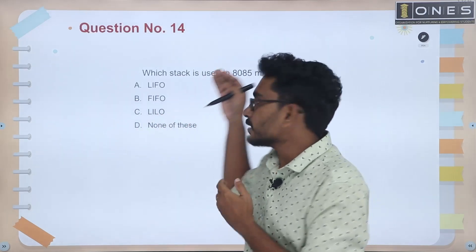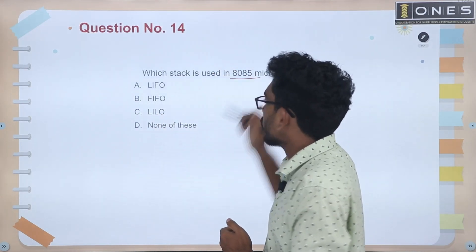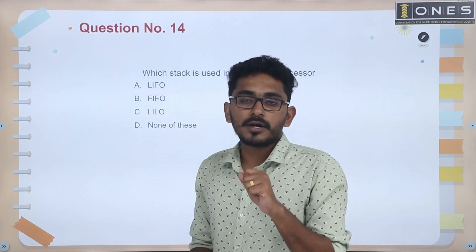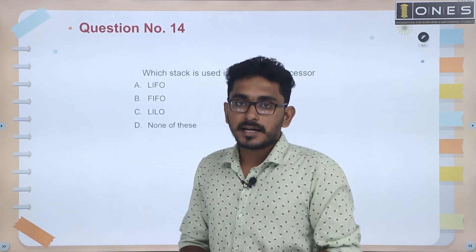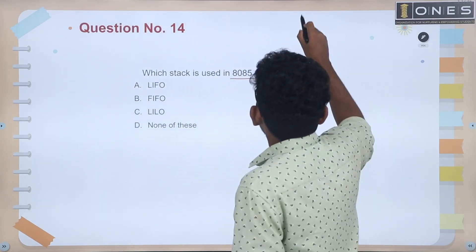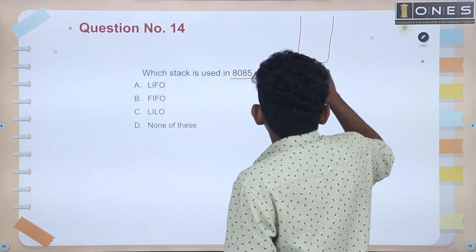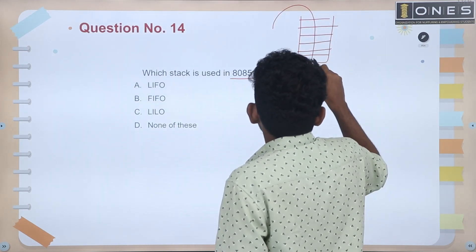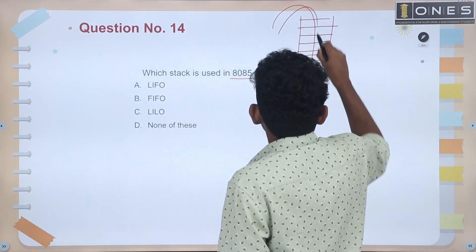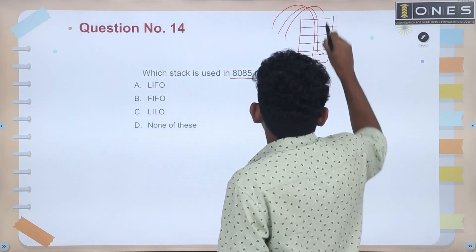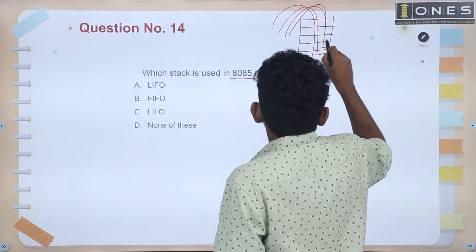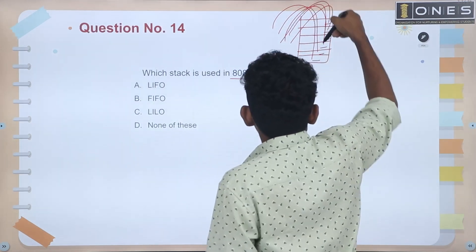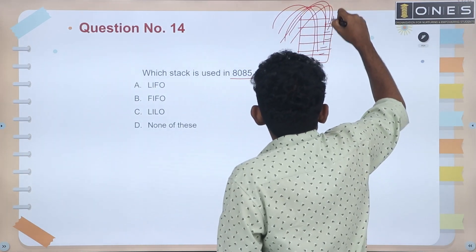Next question: Which stack is used in the 8085 microprocessor? Stack arrangement: 1st data, 2nd data, 3rd data, 4th data, 5th data, 6th data. The topmost data is entered first.